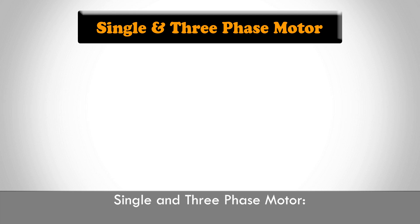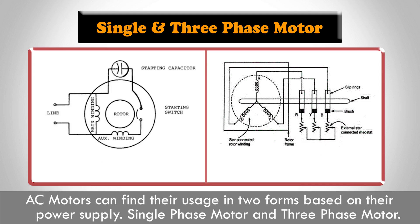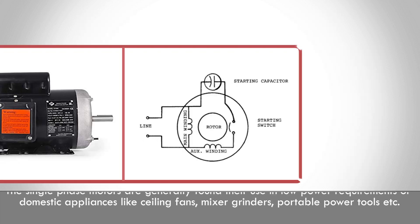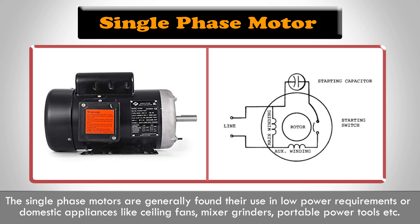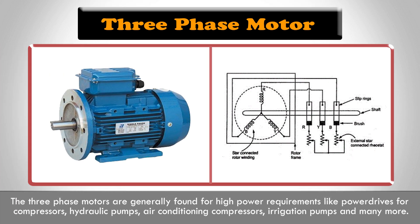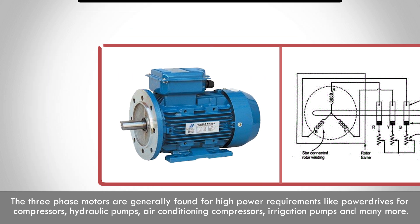AC motors can be found in two forms based on their power supply: single-phase motors and three-phase motors. Single-phase motors are generally used in low power requirements or domestic appliances like ceiling fans, mixers, grinders, and portable power tools. Three-phase motors are generally used for high power requirements like power drives for compressors, hydraulic pumps, air conditioning compressors, irrigation pumps, and many more.